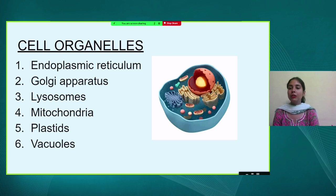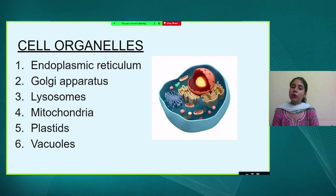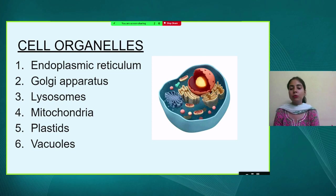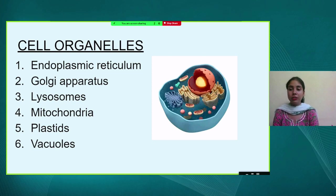Golgi apparatus was discovered by Camillo Golgi. Since it is in close association with the endoplasmic reticulum, its function is to take the proteins and lipids produced by the ER, store them, modify them, pack them, and send them to the targeted site wherever required. One important function of Golgi apparatus is that it produces lysosomes. Lysosomes contain powerful digestive enzymes that digest any foreign material or damaged parts within the cell.